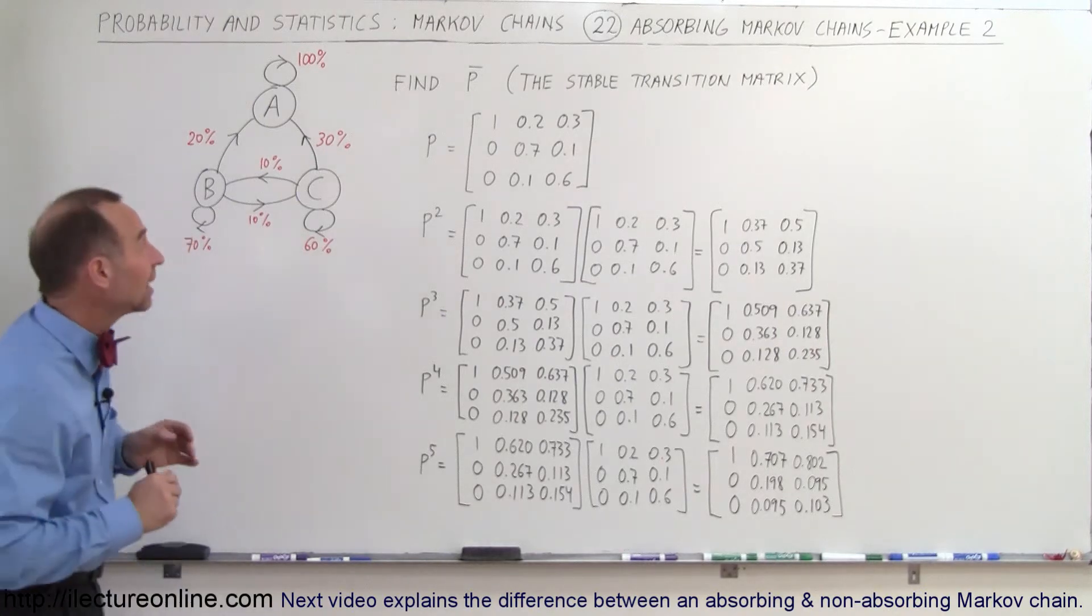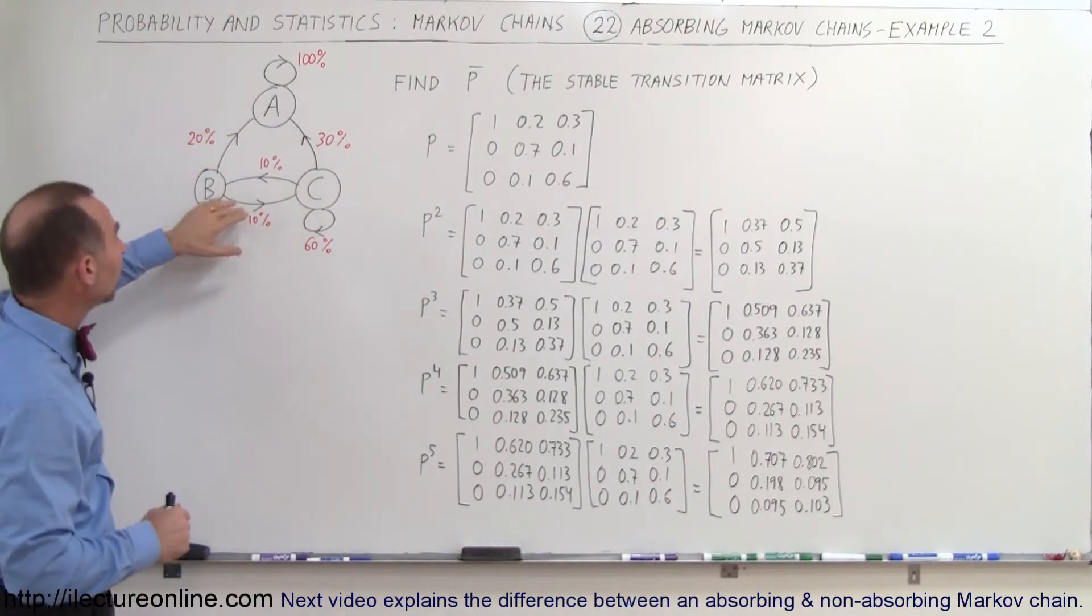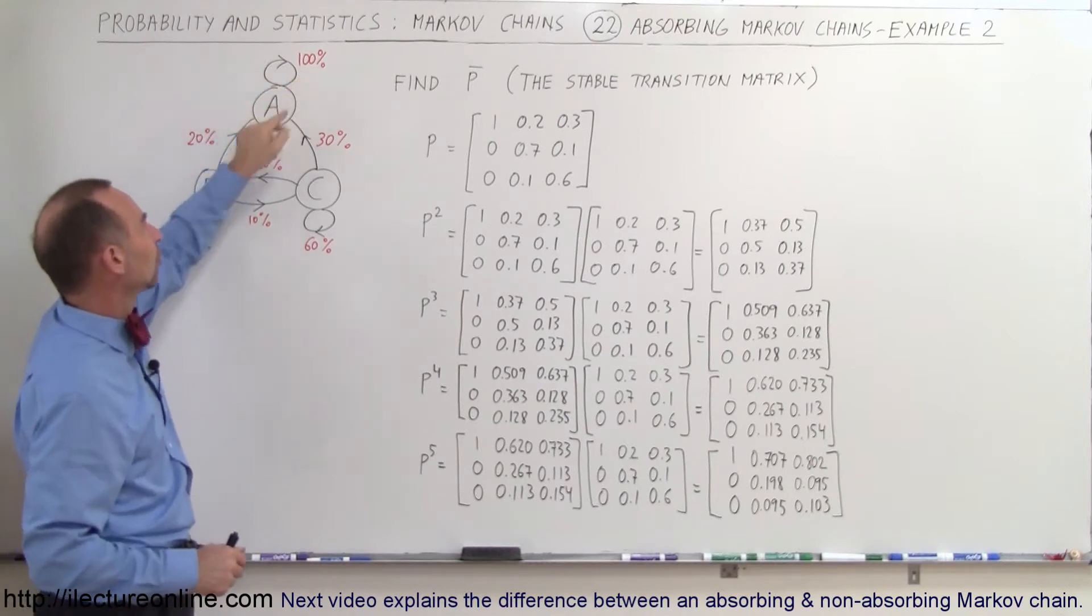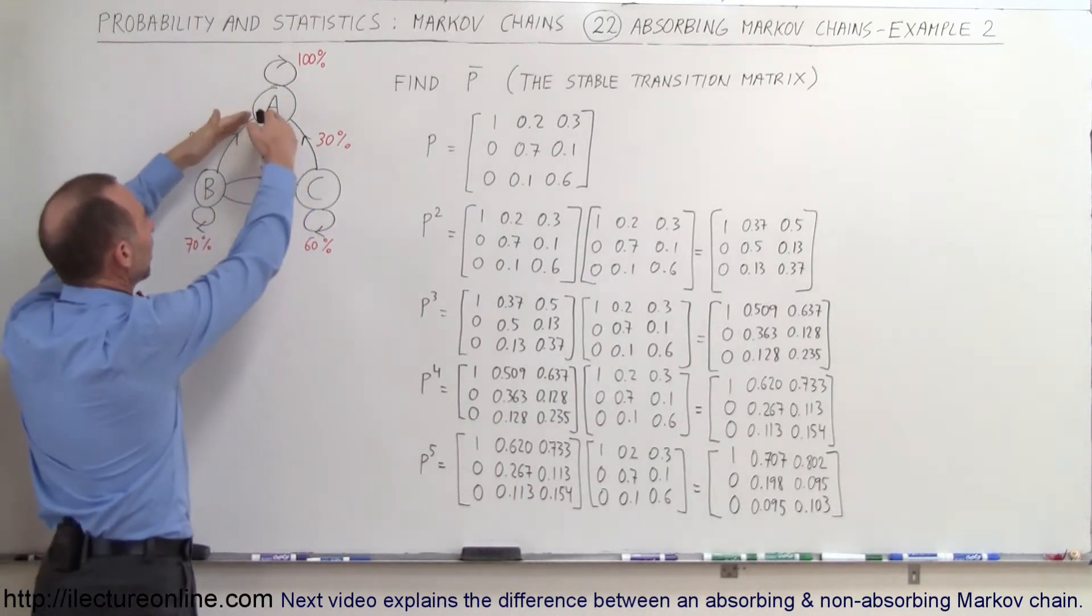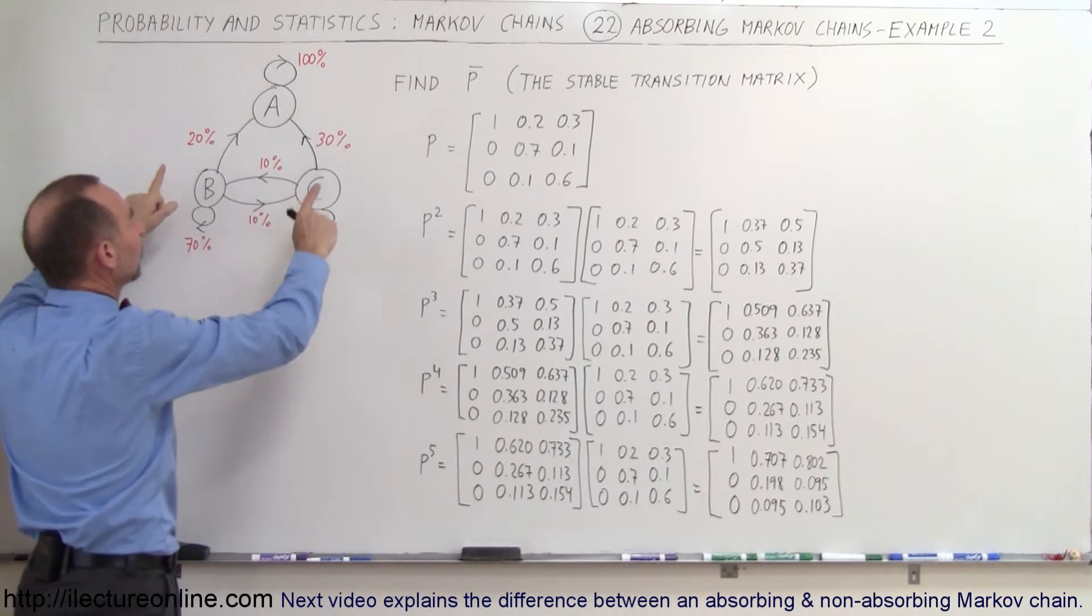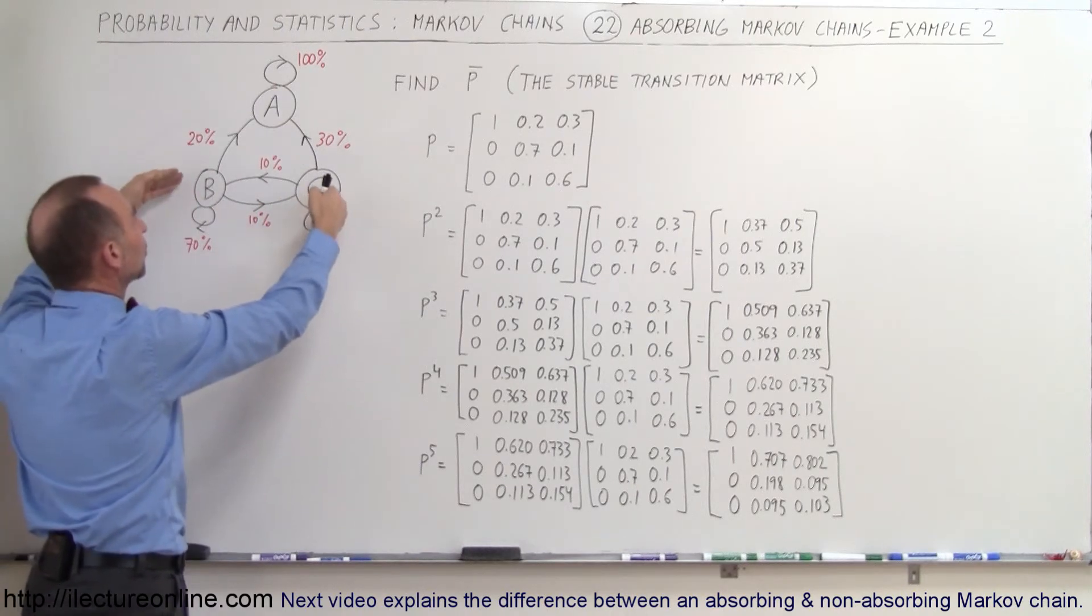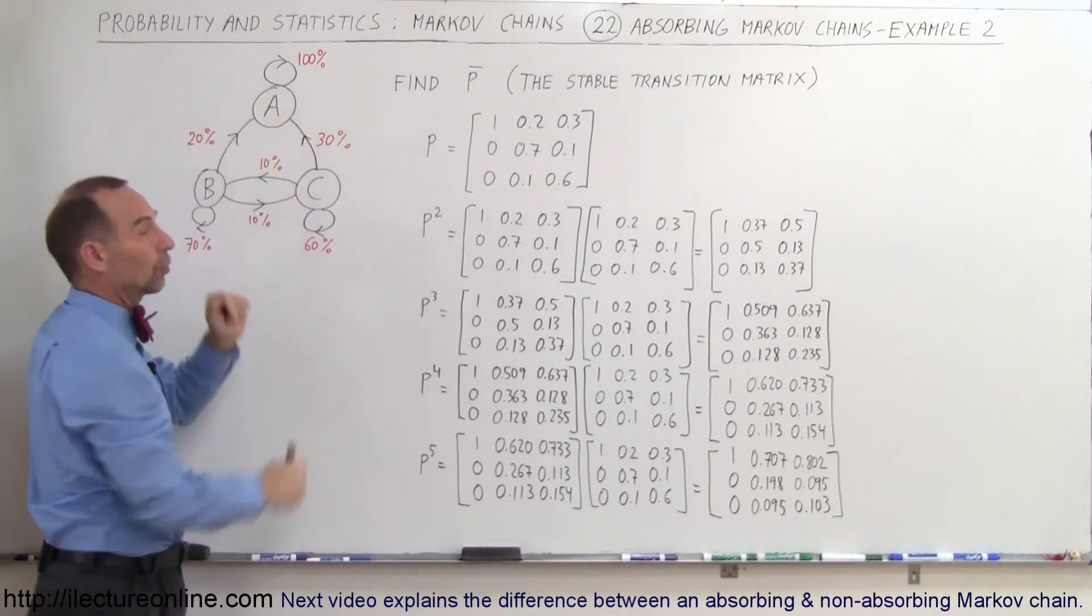Again, an absorbing Markov chain is where one of these stores, for example, will retain all of its customers once they go there, and none of the customers will ever go back to another store, as opposed to the other stores which will retain some of their customers, but some of these customers will also go to the store where no one comes back from.